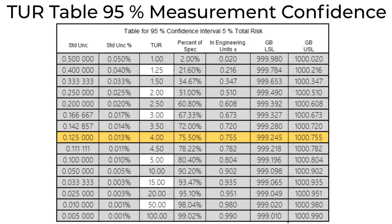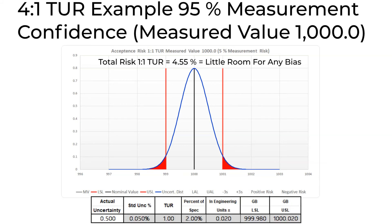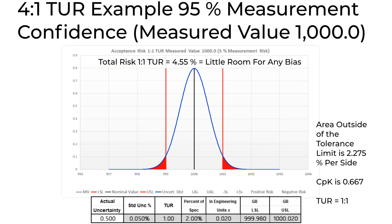Here we have a TUR table showing 95% measurement confidence. The table shows the lower and upper limits where a measured value must fall between to limit the risk to 2.5% on each side. Assuming a 1-to-1 TUR with a perfectly centered measurement, there is little to no room for any variation in the process measurement. Making a conformity assessment with a 1-to-1 TUR almost always requires the measured value to have no bias. In this case, if the measurement is not perfect, there will be more than 2.5% single-sided risk.